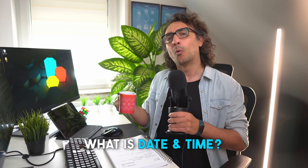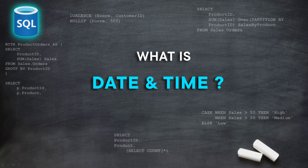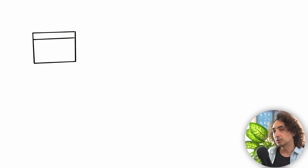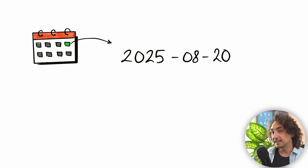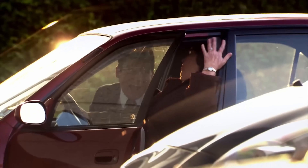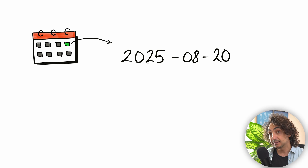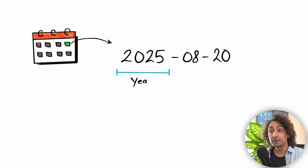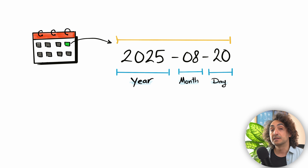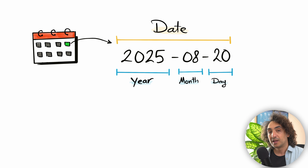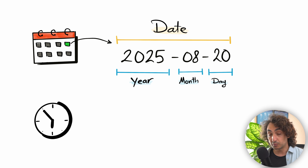So what is a date? If you look at a calendar and pick any date, for example August 20th, 2025, this date could represent an event like a birth date or a project deadline. It has three components: a four-digit number indicating the year, then the month represented as a number between 1 and 12, and finally the day, a number between 1 and 31 depending on the month. In databases, we call this structure a date.